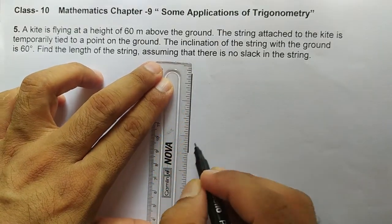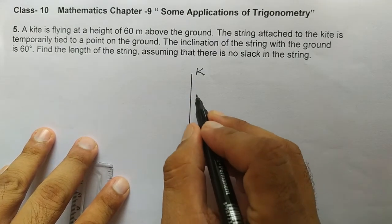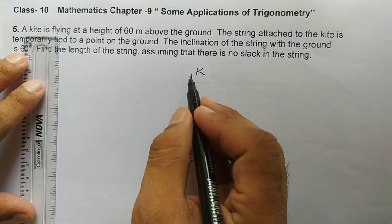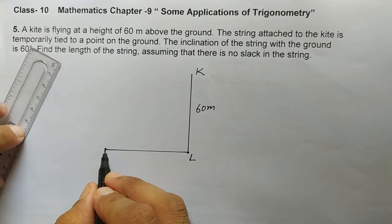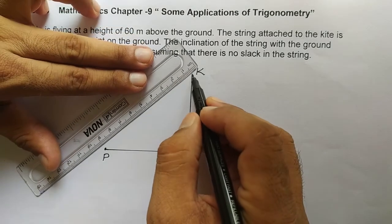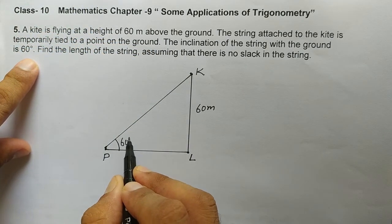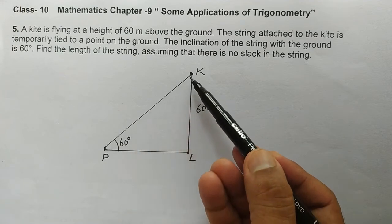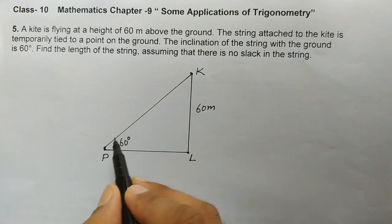Suppose this kite is at point K. This is the kite, and this is the point on the ground. The height KL is 60 meters as given. Now suppose the string is tied on the ground at point P. The string is making a 60-degree angle with the ground. In the figure, KL is the height of the kite, and KP is the length of the string, tied at point P on the ground, making an angle of 60 degrees with the horizontal. We have to find the length of KP.